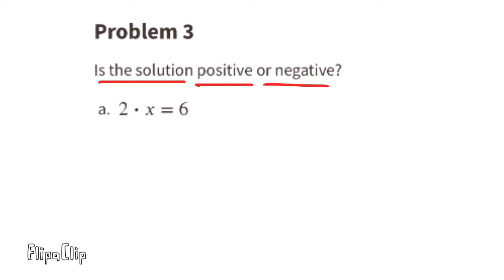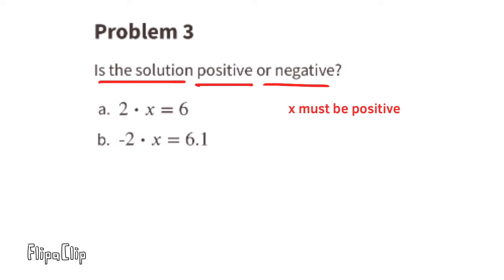Problem number 3: is the solution positive or negative? Part a: 2 times what number equals positive 6? Since a positive times a positive equals a positive, x must be positive. Part b: a negative times what number equals a positive? Since a negative times a negative equals a positive, x must be negative.